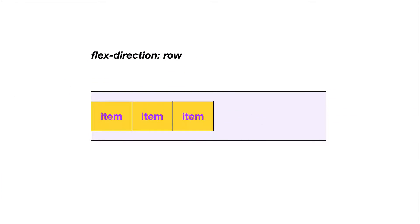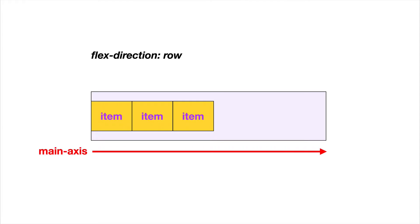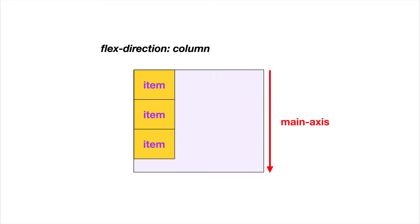If we set it to row, our main axis will be going horizontally and our cross axis will be going vertically in the column direction. And likewise, if we set our flex direction to column, the main axis will be the column and the cross axis will now be the row or the horizontal direction. So now that we understand that justify-content works with the main axis, whatever it's defined as, let's look at exactly what it does.